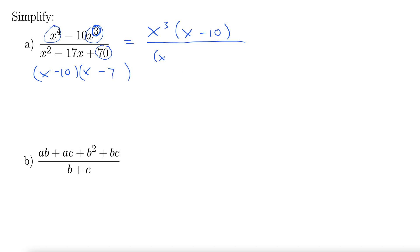So we factor this down. We get x minus 10, x minus 7. And finally, we get our cancellation. That's the best part of these problems is that cancellation at the very end, leaving us with x cubed over x minus 7.